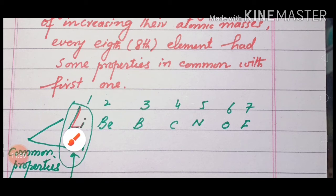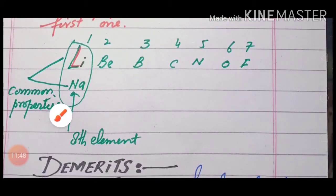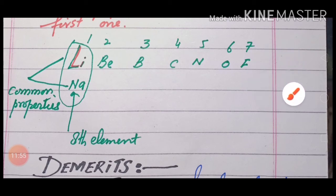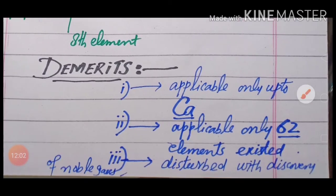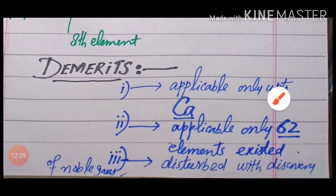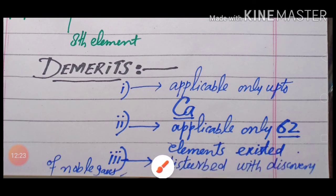For example, sodium is the 8th element and the 1st element is also an alkali metal — sodium is also an alkali metal, so they share common properties. Noble gases were not yet discovered at this time. The Law of Octaves failed because it was applicable only up to calcium, only covered 62 elements, and when noble gases were discovered, the law was disturbed and could no longer be applied.